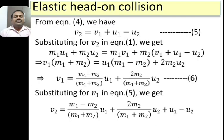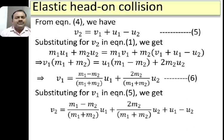From equation 4 we can write V2 = V1 + U1 − U2. Let this be equation 5. Substituting for V2 in the conservation of momentum equation (equation 1), we get M1·U1 + M2·U2 = M1·V1 + M2(V1 + U1 − U2). Taking V1 as common on the right hand side gives V1(M1 + M2), and collecting U1 and U2 terms to the left hand side gives M1·U1 − M2·U1 + 2M2·U2, which simplifies using U1(M1 − M2) + 2M2·U2.